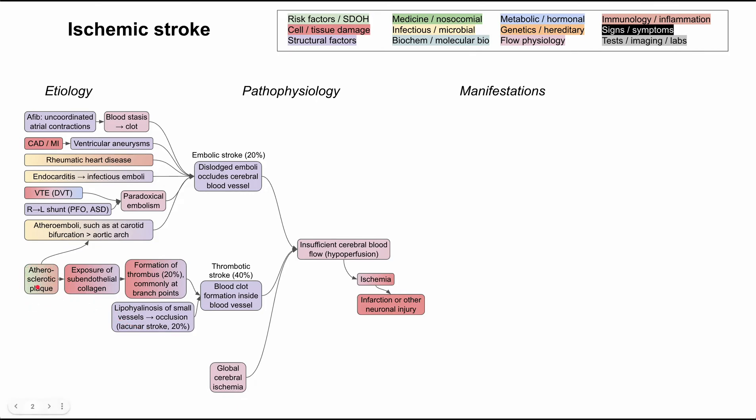So first, the atherosclerotic plaques. These plaques that can be thrown into atheroemboli, they can also just build in place. They can also get bigger and bigger until they themselves occlude the blood vessel that they started in. And that's essentially just called atherosclerotic ischemic thrombotic stroke.